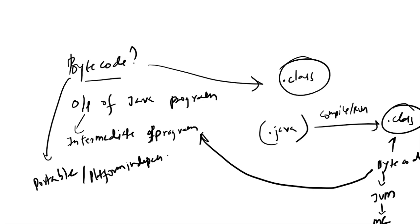Why it makes it platform independent is because bytecode will be the same for all the platforms. You will generate the same bytecode for Windows, Linux, and Mac. But when you are interpreting your bytecode with the help of the JVM, you interpret it in a different way for Windows, for Linux, and for Mac. So that interpretation is different for different platforms, but you generate the exact same bytecode for all platforms.